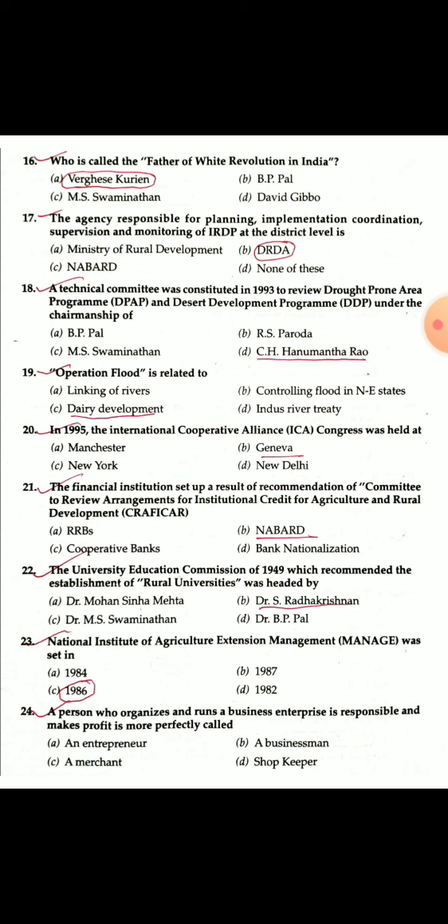Question 18: A technical committee was constituted in 1993 to review the Drought Prone Area Program (DPAP) and Desert Development Program (DDP) under the chairmanship of C.H. Hanumantarao. The committee was formed to analyze the DPAP and DDP programs.